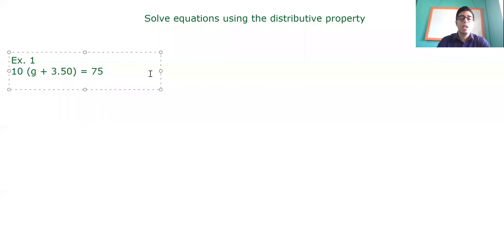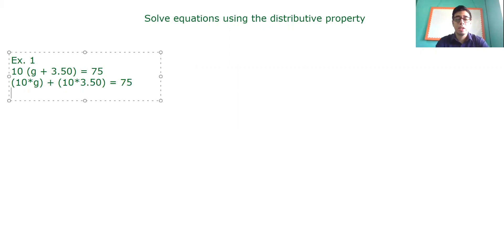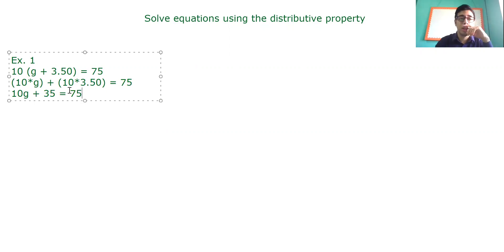Then we are going to continue, and the 10 that is multiplying outside the parenthesis needs to multiply all the terms inside the parenthesis. So what we have is 10 times G plus 10 times 3.50, which equals 75. So that gives us 10G plus 35 equals 75. The only multiplication needed is 10 times 3.50, which is 35.